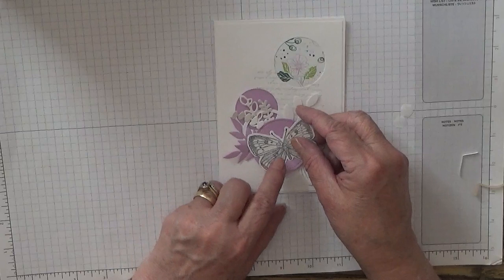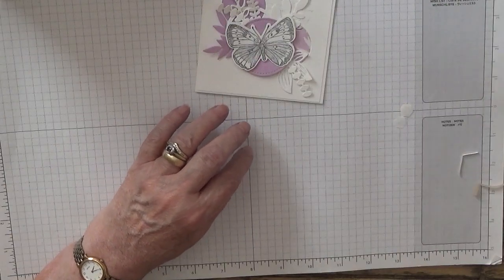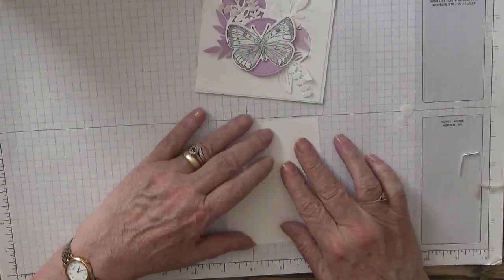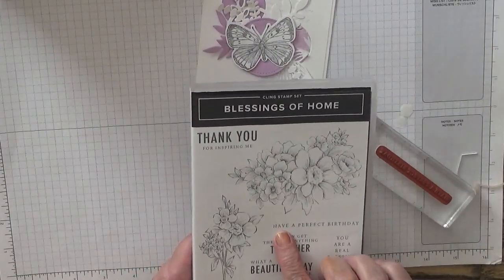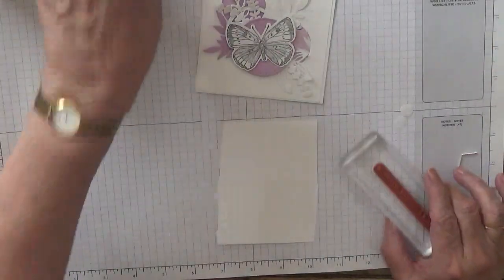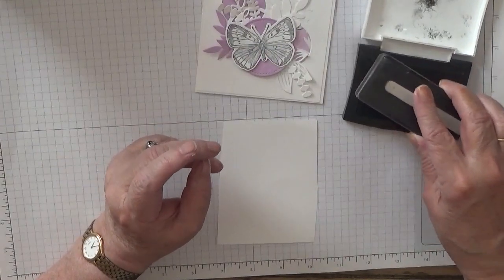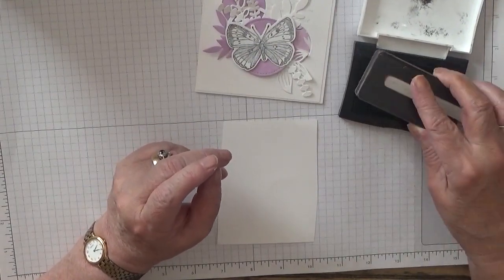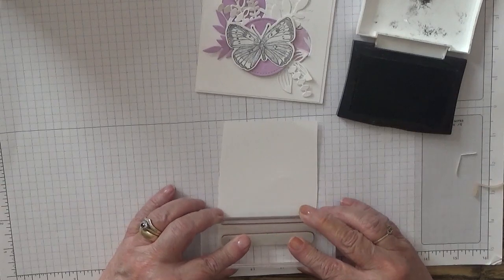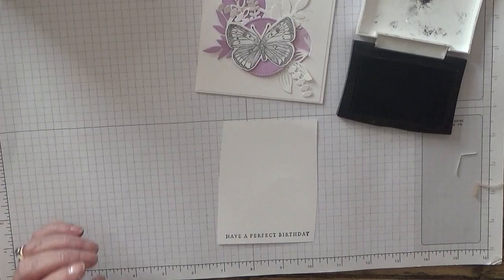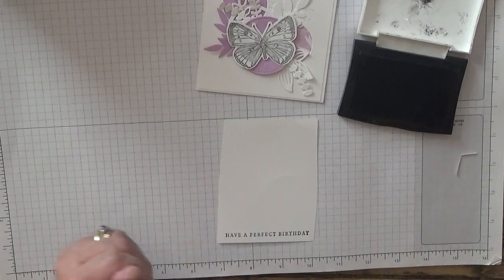Then we'll put this on there when it's colored with the sentiment which we've got to do yet. The sentiment we're going to do from Blessings of Home and it's Have a Perfect Birthday, which I've got here. Using my VersaFine ink, I'm going to ink that up and stamp that down there. Have a perfect birthday, which we will.